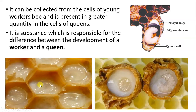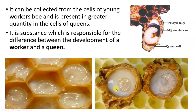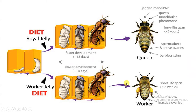Worker larvae are given royal jelly only in the starting 3 days; after that, royal jelly is not given to them, and they will convert into worker bees. The queen larvae, however, are given royal jelly up to the adult stage until she dies. This is why there is a difference between the worker and queen — the queen is given royal jelly throughout her life, while workers only receive it in the initial 1 to 3 days. Workers are unable to produce eggs, and the queen is the only one able to produce eggs.